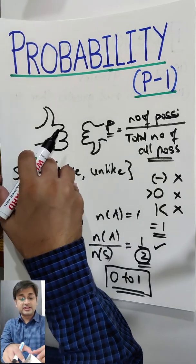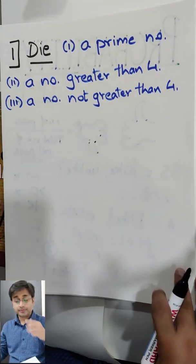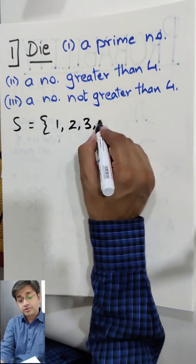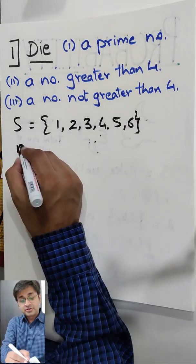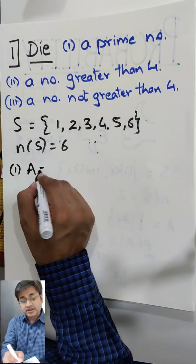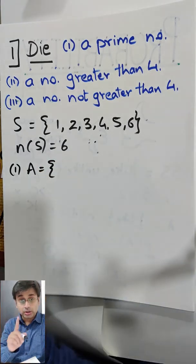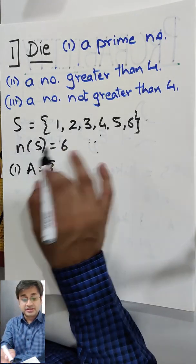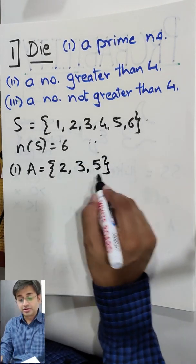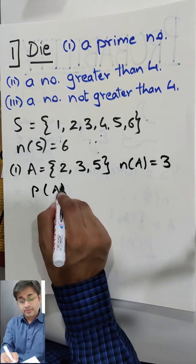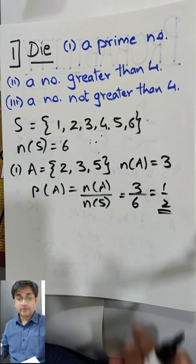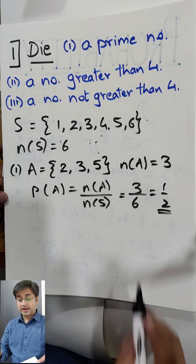Let's take a few questions to understand what probability actually is. A die is thrown. When a die is thrown, what are the possibilities? A die has six numbers — 1, 2, 3, 4, 5, and 6. So number of S is equal to 6. Now the first event: prime number. Let's call it A. What are the prime numbers out of these? Remember, 1 is neither prime nor composite — don't take 1 as a prime number. So: 2, 3, 5. Number of A is equal to 3. Therefore probability of A is 3 by 6. Always write in reduced form — if you do not write in reduced form, one mark is lost. So write it in reduced form, which is 1 by 2.